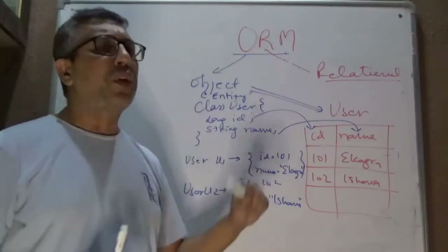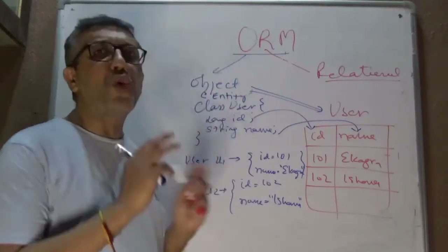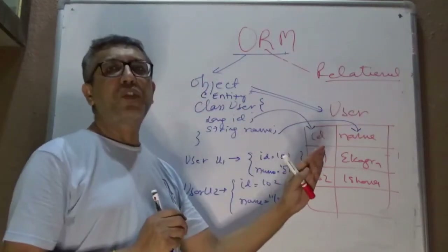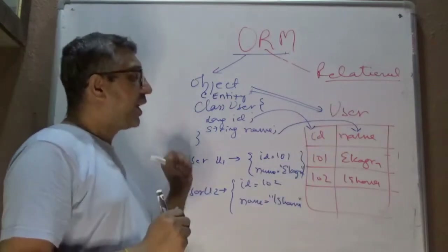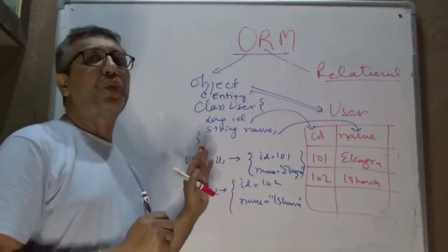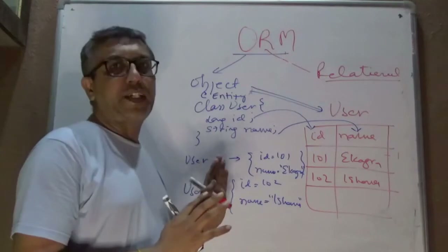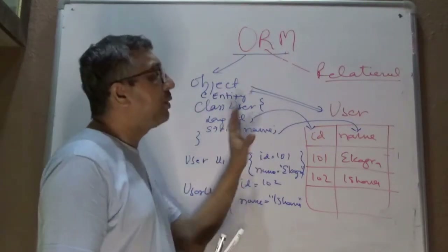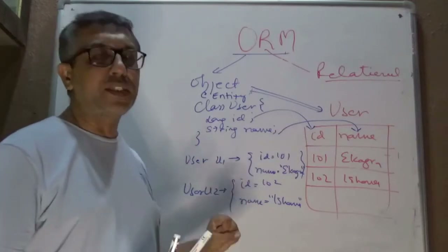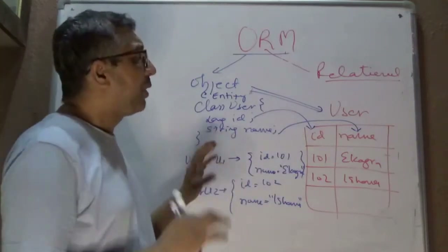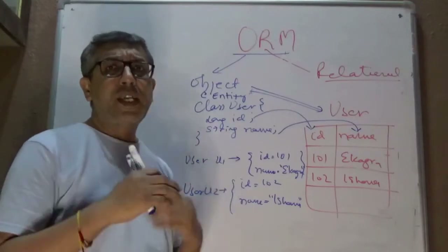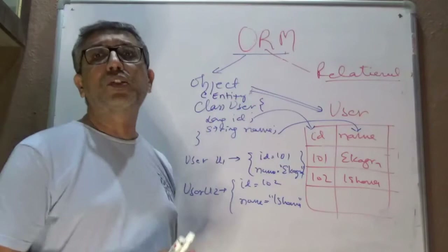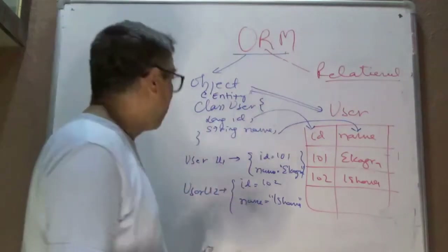What is more important to understand is this whole notion of mapping — data sitting on the relational side in rows and columns is available to you as objects on the object side. Let's look into some more conceptual mismatches that happen on both worlds, to appreciate how important ORM frameworks are.